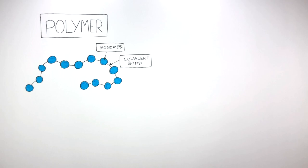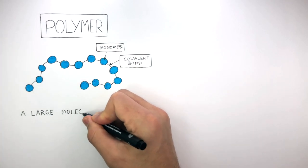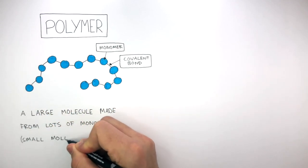So to summarize, a polymer is a large molecule made from lots of monomers, which are small molecules.